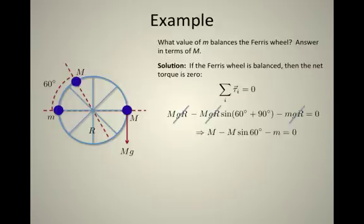The G times R cancels out and I have M times sine of 60 subtracted off of capital M, and then I take a minus little m. And I end up with little m has to equal 1 minus square root of 3 over 2 times capital M.